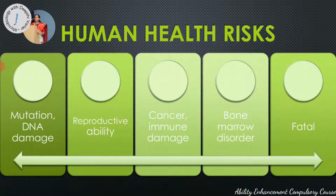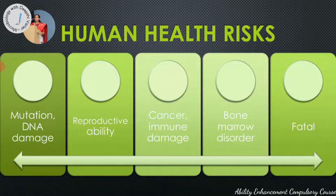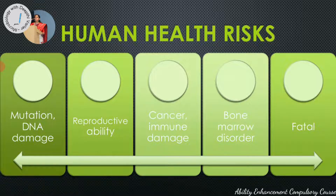The first health risk to human beings is mutation and DNA damage. Radiation causes a variety of unpredictable mutations — changes in DNA that are permanent and hereditary, meaning they can be passed on to the next generation. Long-term chronic exposure affects reproductive ability, can trigger cancer, causes immune damage by weakening the immune system, leads to premature aging, bone marrow disorders, and reduced blood cell counts. High doses of radiation can be fatal.